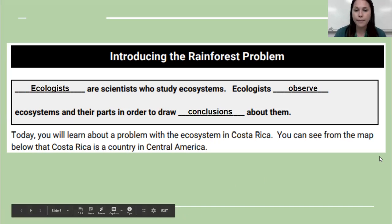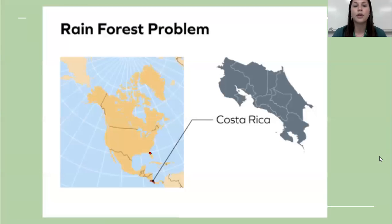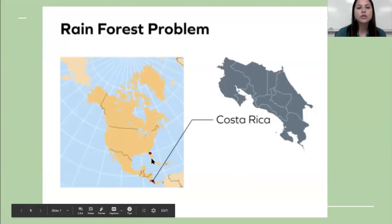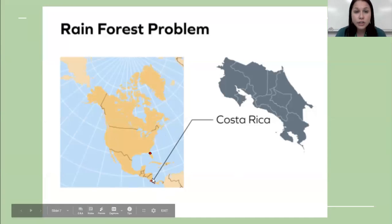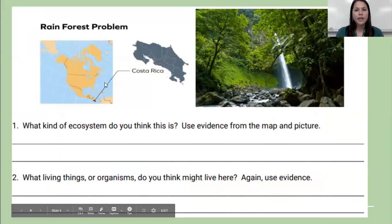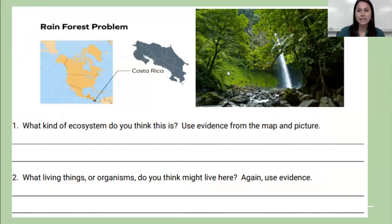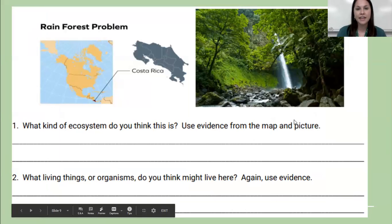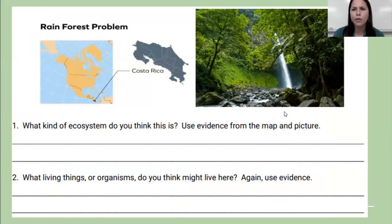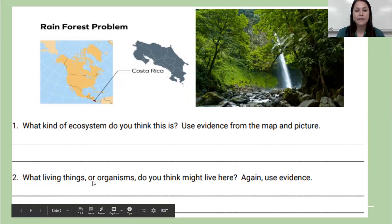We're going to learn about a problem in an ecosystem in Costa Rica. If we look at this map, here's Jacksonville — this little red dot — and Costa Rica is south of us, towards the middle of the earth. If it's closer to the equator and down in Central America, look at this ecosystem. What kind of ecosystem do you think it is, and what living things or organisms might live there? Pause the video and write down your ideas.